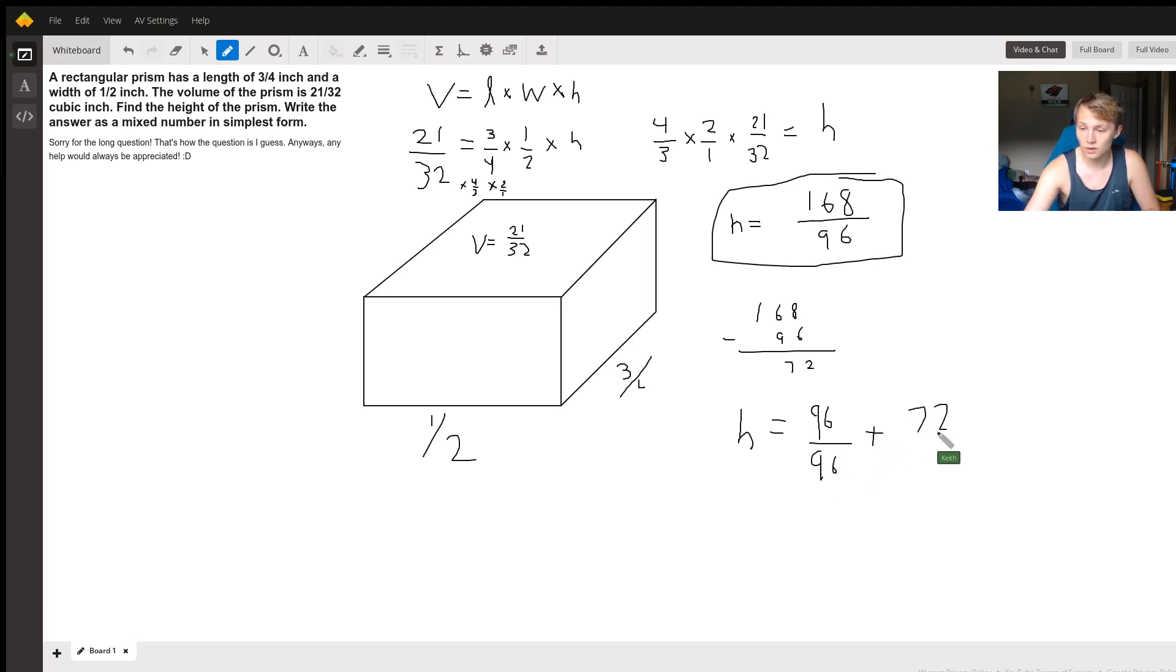Right, and so if you add these top together you would get 168 over 96, which is exactly what we want. So our answer as a mixed fraction is 1 and 72/96.